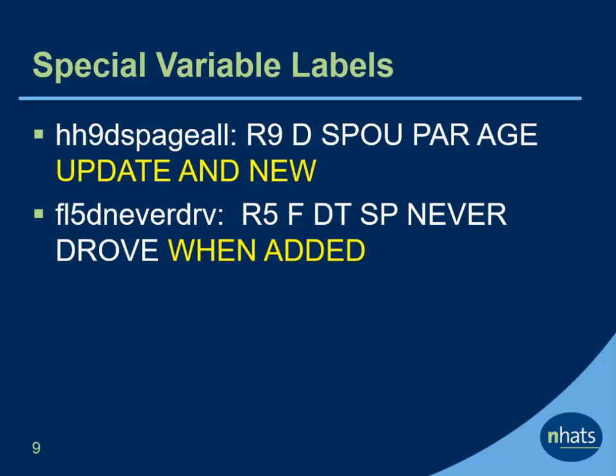Sometimes the phrase UPDATE AND NEW appears in a variable label. This phrase indicates that the information in the variable combines updated information for continuing cases with new information for new cases. Sometimes the phrase WHEN ADDED appears in a variable label, indicating that the information in the variable is from the round when the case was added. For example, the flag from round 5 that indicates the SP never drove was measured in the year that the SP was added to the sample. For more examples of variables in the OP file, see the tutorial using the other person file in NHATS.